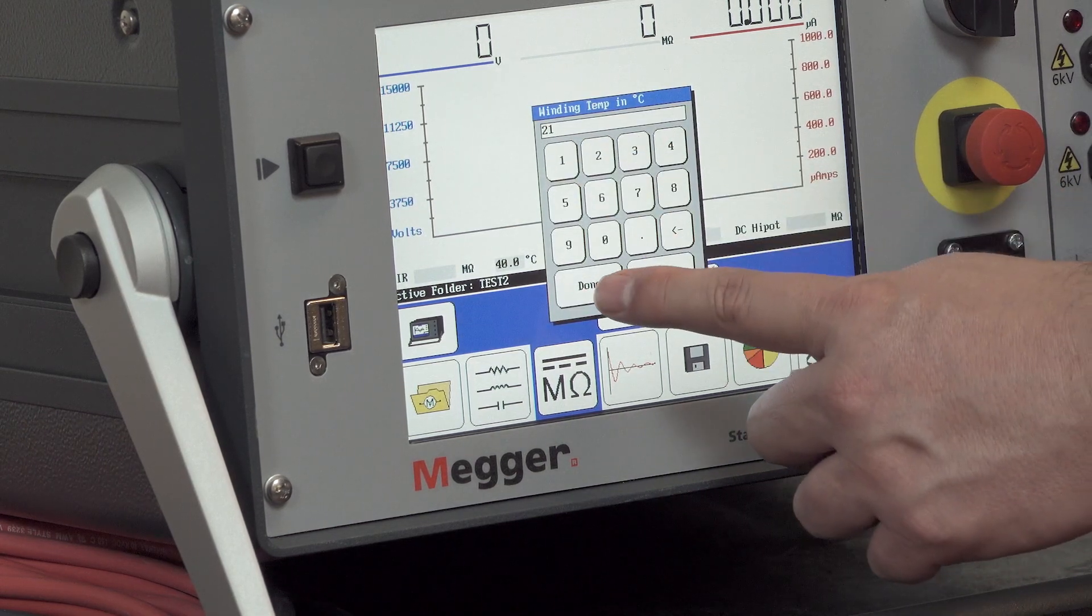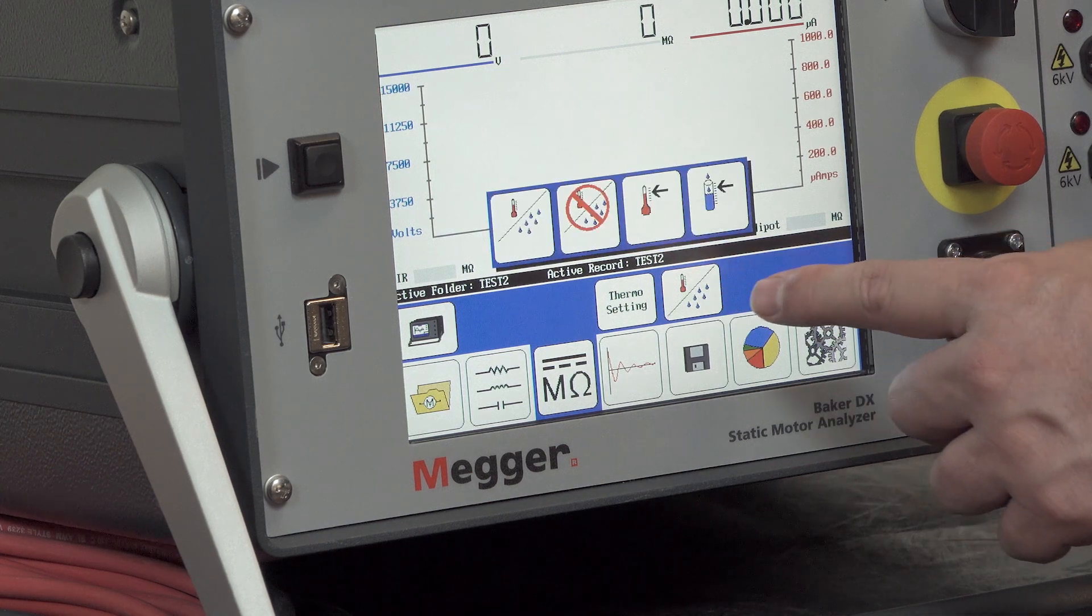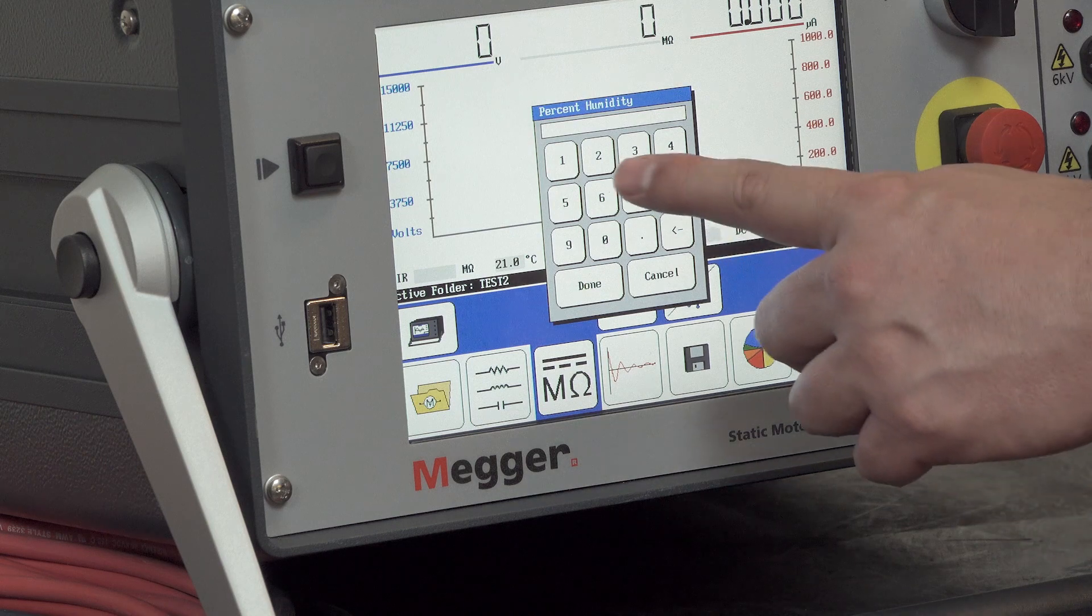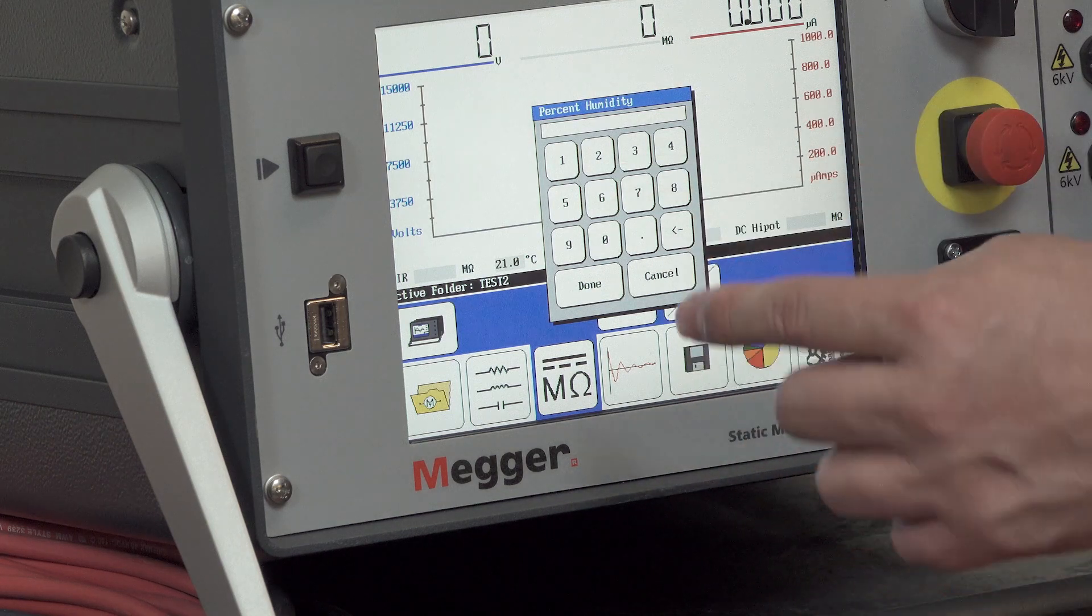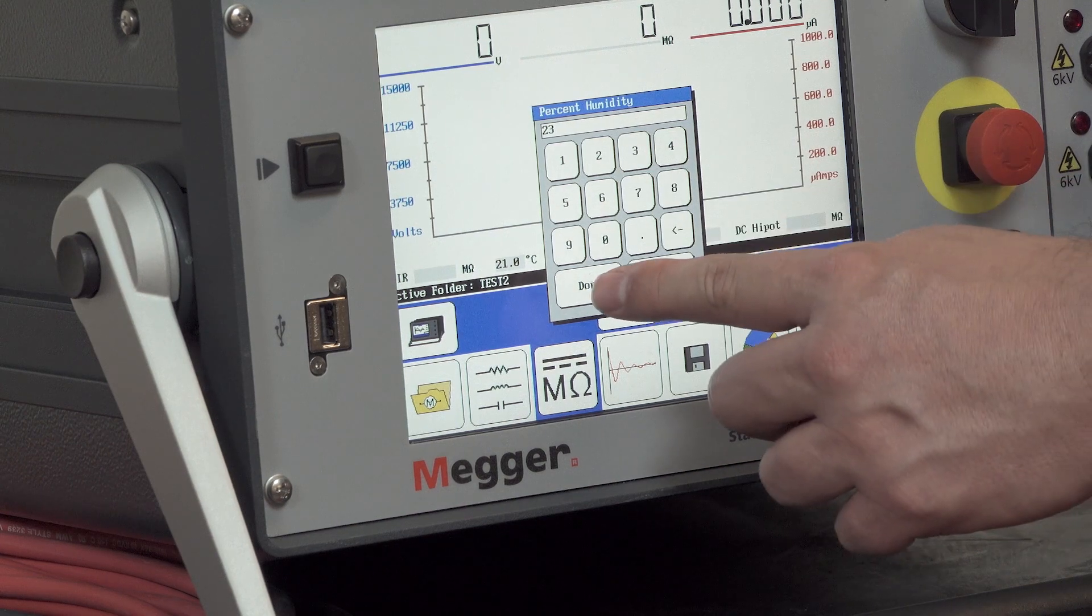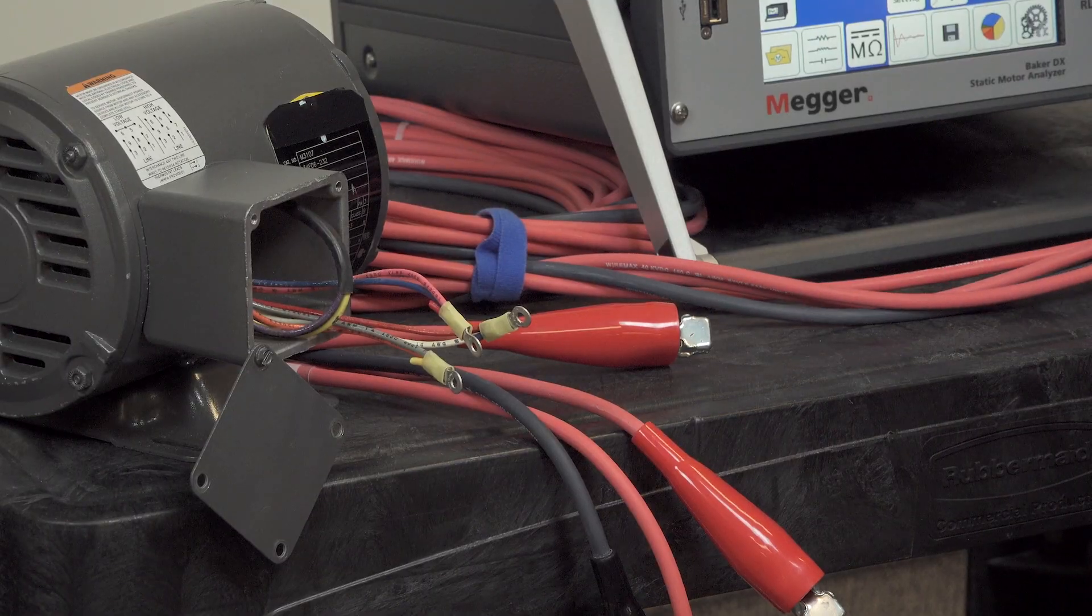And if I wanted to include the humidity, I can do it by selecting that icon and then measuring humidity and then entering the value here, 23%.